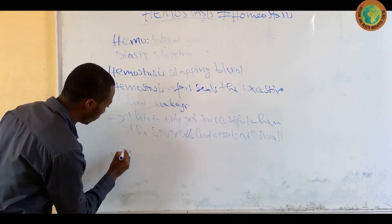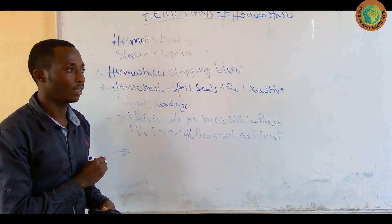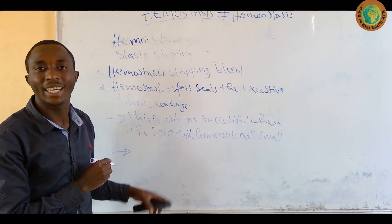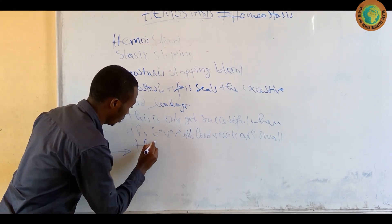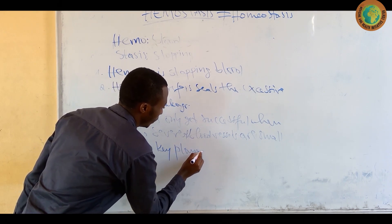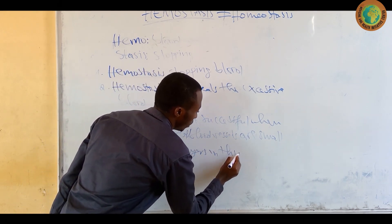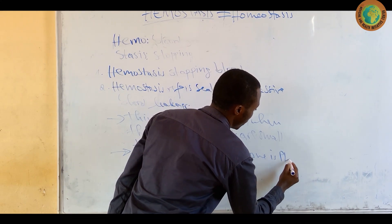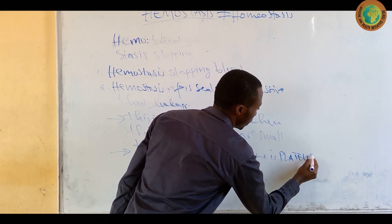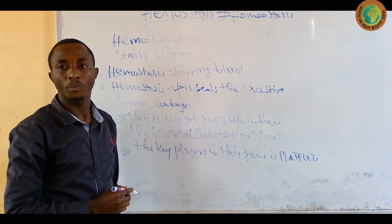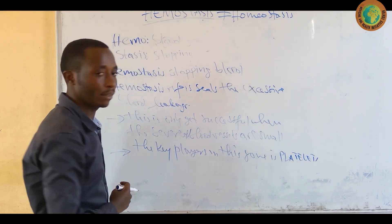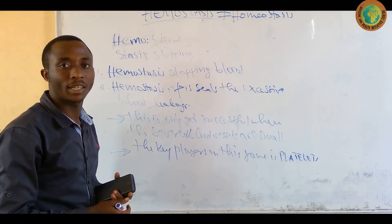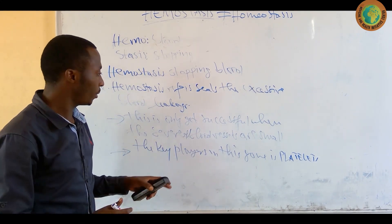You have to keep in mind that the key players in this game or match are platelets. The key players in this game of hemostasis are platelets. You know this is one of the three components of blood cells. If you remember, you have white blood cells, red blood cells, and platelets.